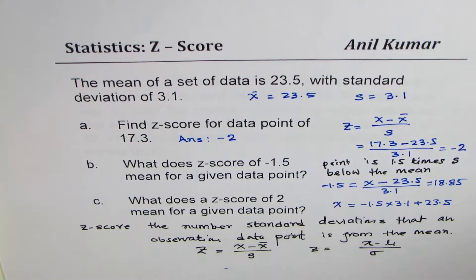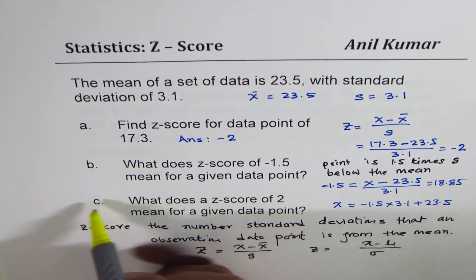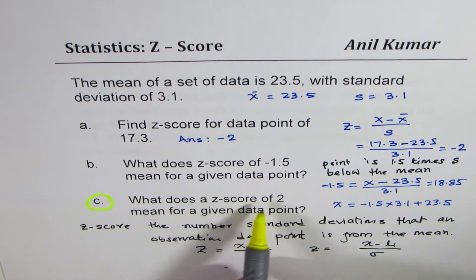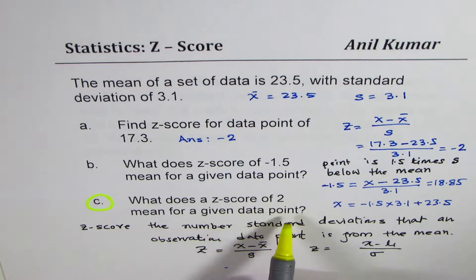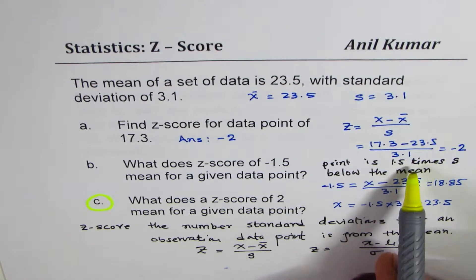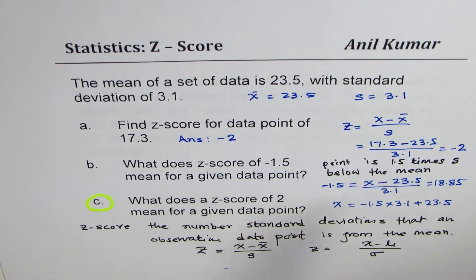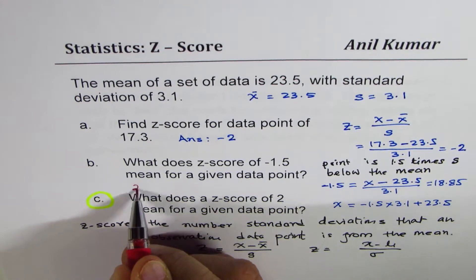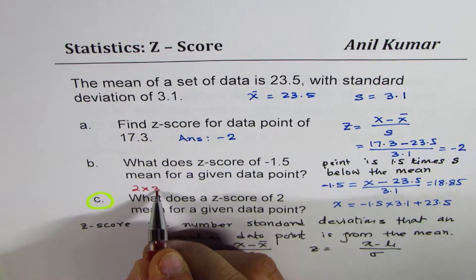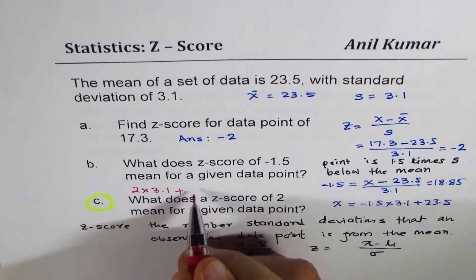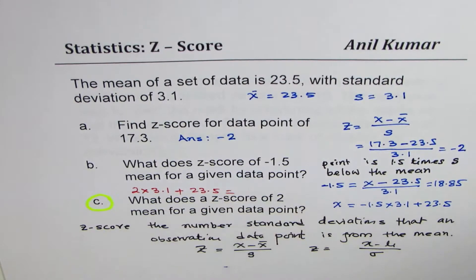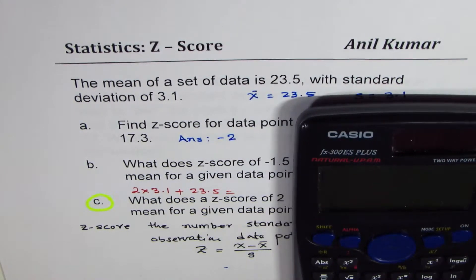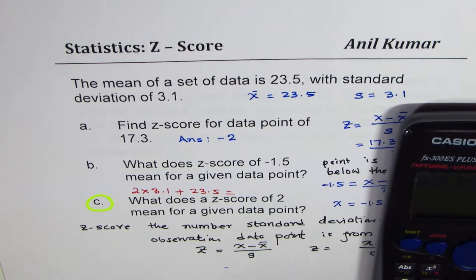Part (c) I'll leave for you: what does a z-score of 2 mean for the given data point? It is higher than the mean — 2 times the standard deviation above the mean. The actual value will be the mean 23.5 plus 2 times 3.1, which gives you 29.7.